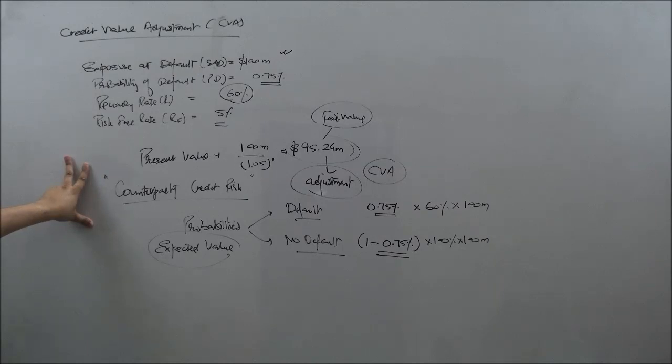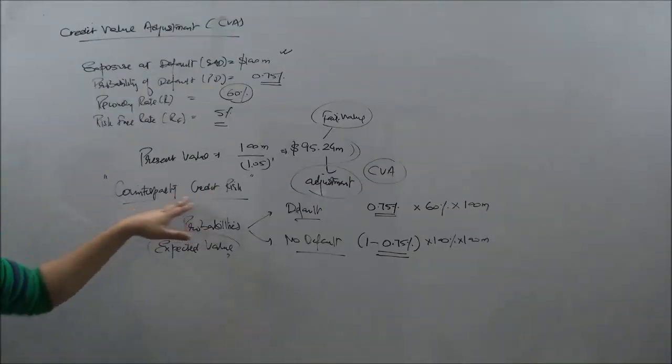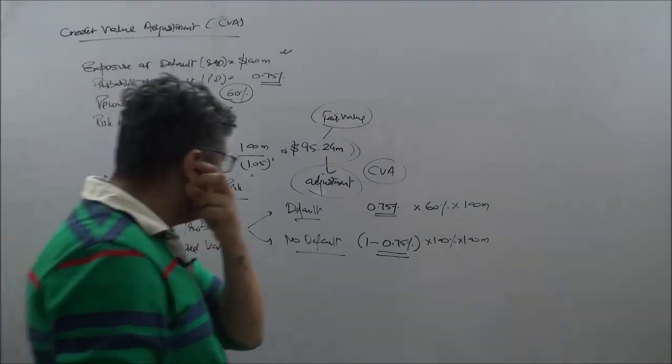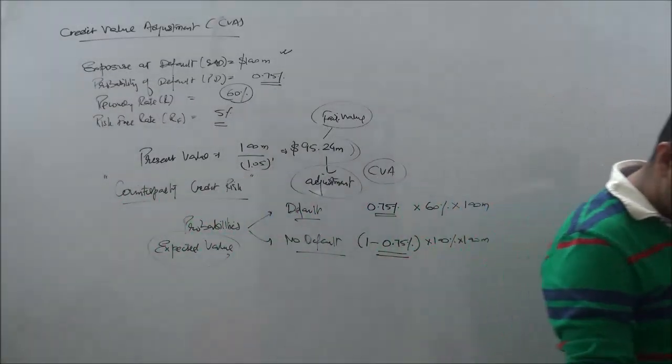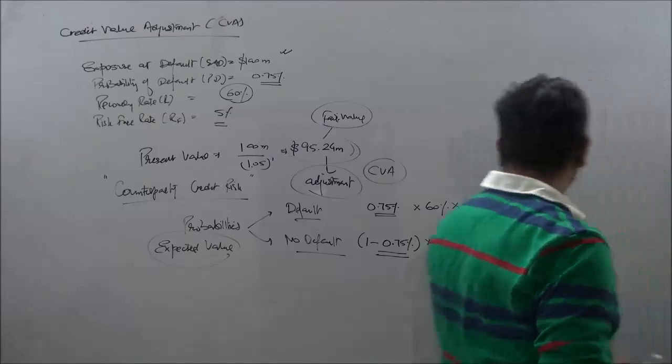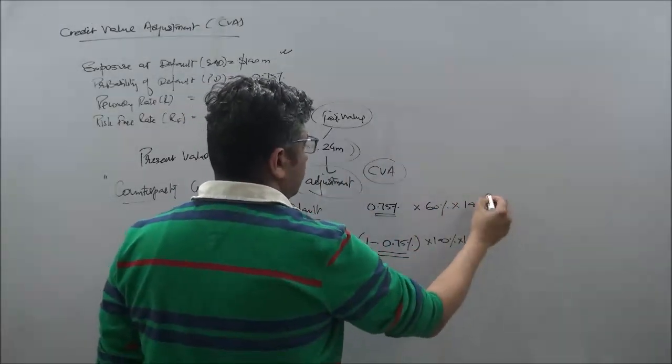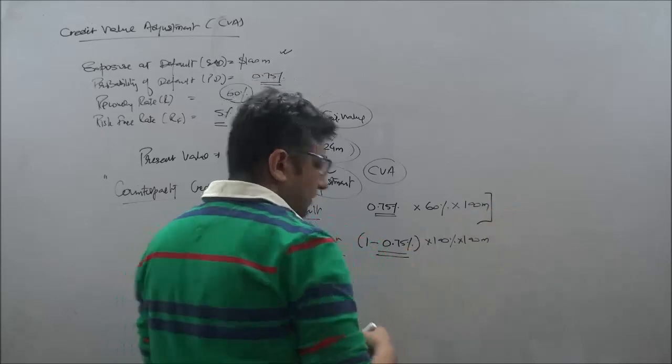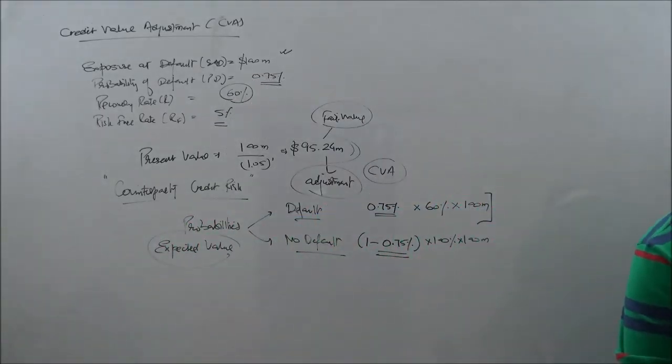We are able to take the present value of these expected values to give us something called as the adjusted value after taking into consideration the counterparty credit risk. So when we do this calculation very quickly, we are saying, with the calculations together, let us do this calculation here on the excel sheet and then we can pick those values and take the present value thereof.